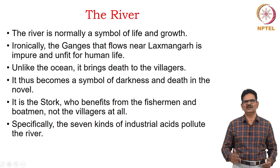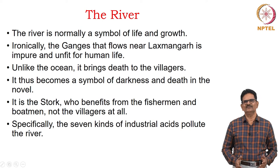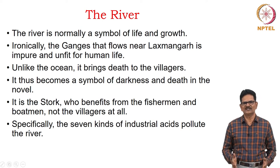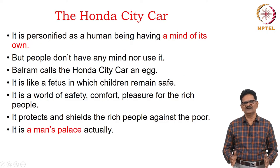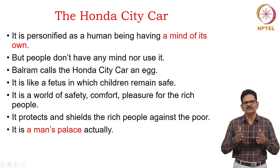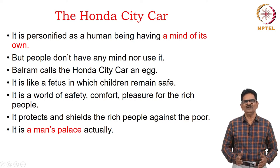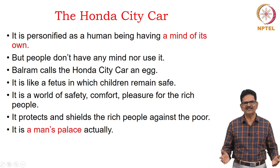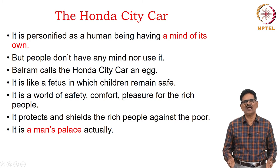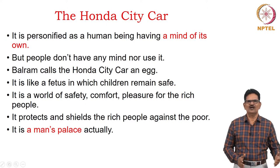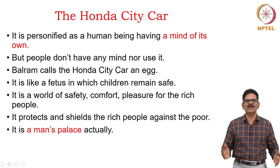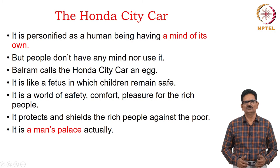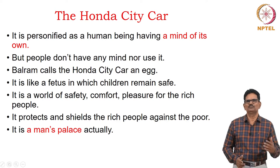It is the Stork, the landlord, who benefits from the fishermen and boatmen, not the villagers. Specifically, there are seven kinds of industrial acids which pollute the river, as mentioned by Balram Halwai. The Honda City car is another symbol — it is personified as a human being having a mind of its own. But ironically, the people don't have any mind nor use it logically or ethically. Balram calls the Honda City car an egg, like a fetus in which children remain safe. The rich people find safety inside it — a world of safety, comfort, and pleasure — which protects and shields them against the poor people or the negative environment.